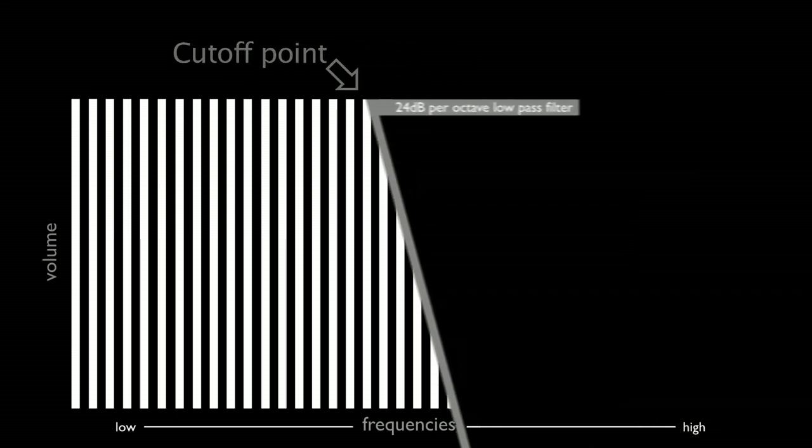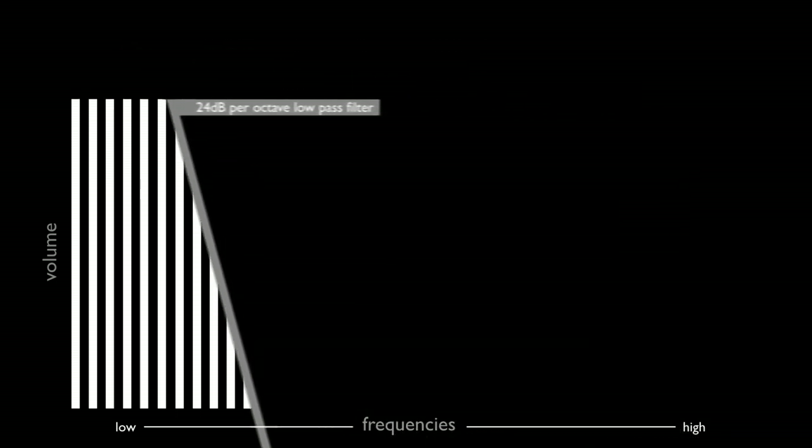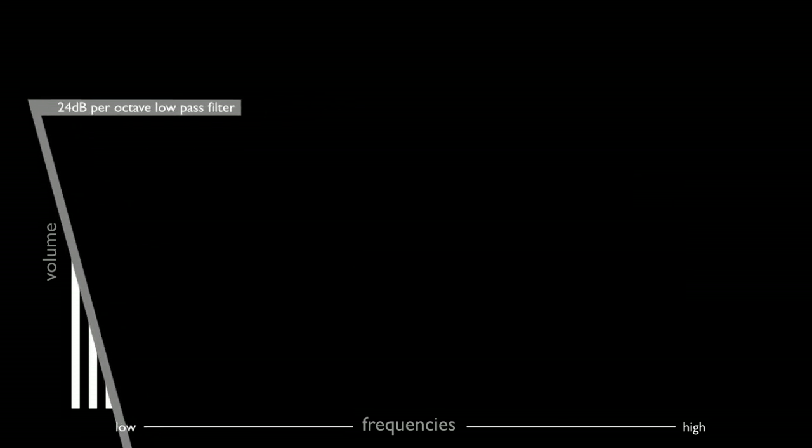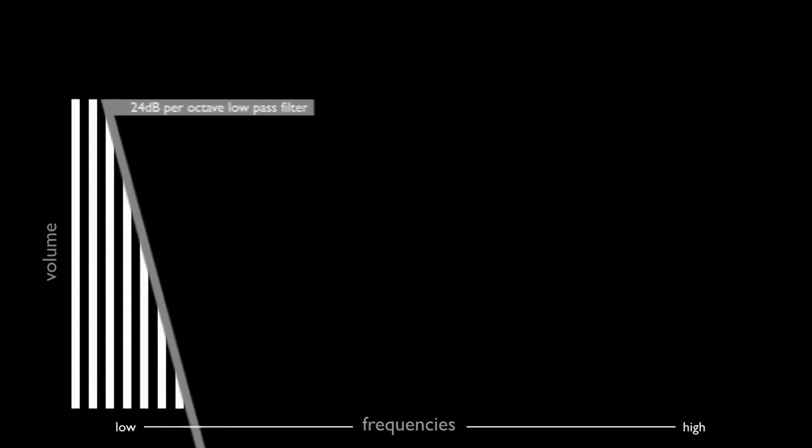The low pass filter. This successively removes high frequencies from the sound. The harmonics above the cutoff point are progressively attenuated or removed.